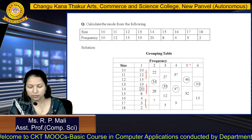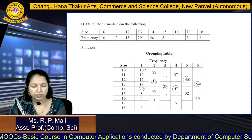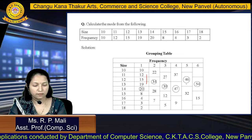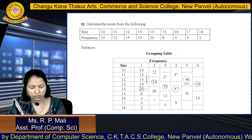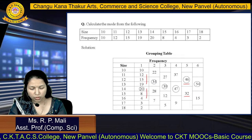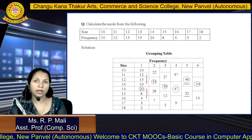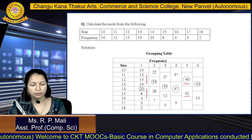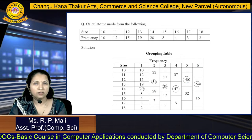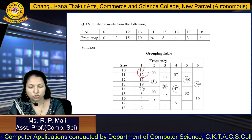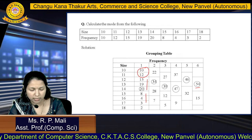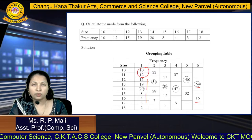In the fifth column, leave the first frequency (10) and add the next 3: 12 plus 15 plus 19 equals 46; then 20 plus 8 plus 4 equals 32. Only 2 frequencies remain, so we leave them. For the sixth column, skip the first 2 frequencies and add the next 3: 15 plus 19 plus 20 equals 54; 8 plus 4 plus 3 equals 15. Only 2 frequencies remain, so we leave them.